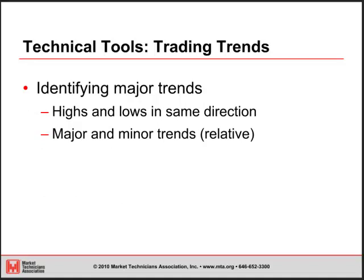Identifying major trends — basically we're just looking for your highs and lows moving the same direction. This essentially means if we're seeing higher highs and higher lows, then that's going to be an uptrend. If we're seeing lower highs and lower lows, that's a downtrend. We see anything else — if it's higher highs but lower lows or vice versa — anything other than those highs and lows moving the same direction is going to tend to be a sideways trend or consolidation.